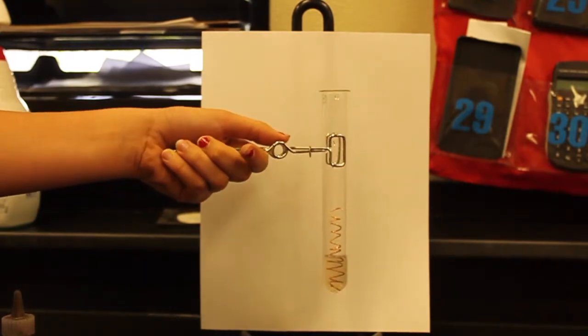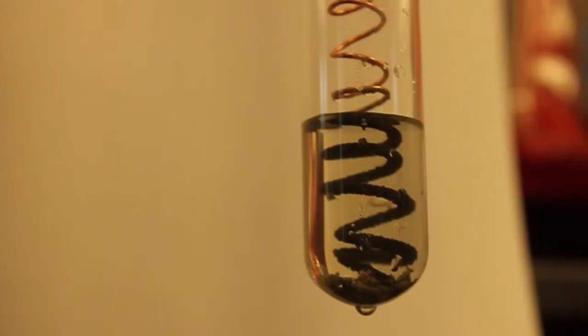Quickly the copper reacted with the AgNO3 to create a single replacement reaction. Silver quickly gathered on the copper as a solid and the copper NO3 became an aqueous solution.